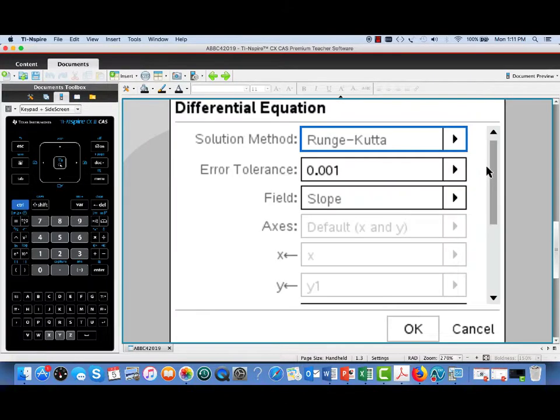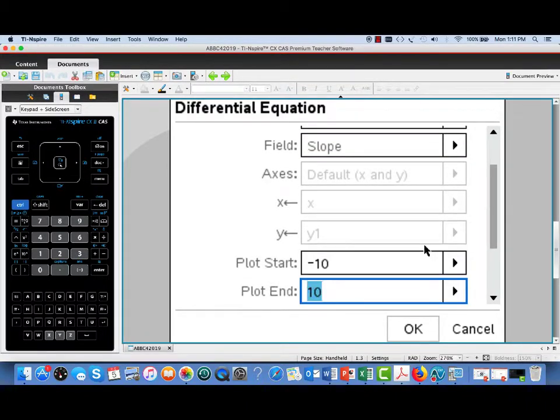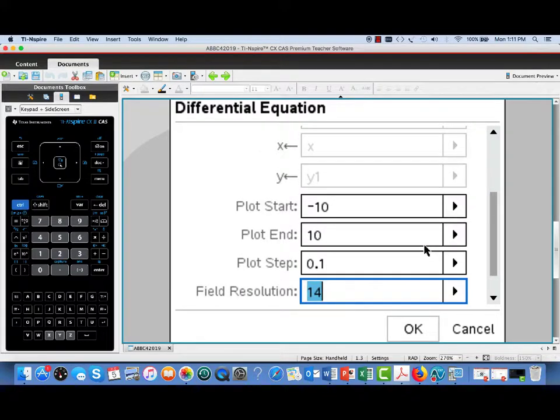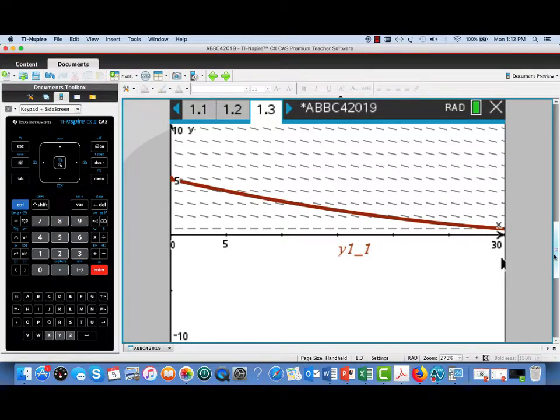Now, I'd like to have a little bit finer slope field. So, I'm going to edit the parameters. And you'll see the numerical solution method that was used here is something called Runge-Kutta. Now, I'm going to go down to the bottom of these parameters where we see plot start, plot end, plot step, and finally, there's the field resolution. Its default is 14. I've doubled that to 28. That gives us a much finer slope field.